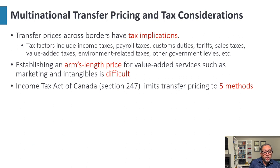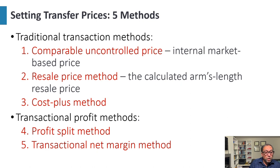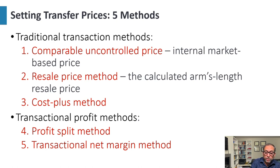Transfer prices across borders have tax implications. Tax factors include income taxes, payroll taxes, custom duties, tariffs, sales taxes, environmental-related taxes, and government levies. Establishing an arm's length price for value-added services such as marketing and intangibles is difficult. Income Section 247 limits transfer pricing to five methods: traditional transaction methods — comparable uncontrolled price (internal market-based price), resale price (the calculated arm's length resale price), and cost-plus method — and transactional profit methods — profit split method and transactional net margin method. Tax minimization methods are allowed under Canadian tax law.